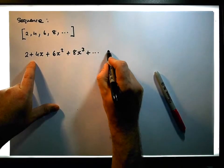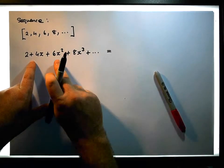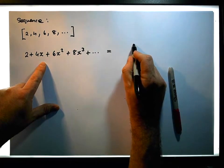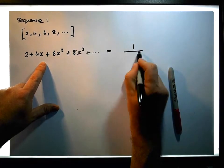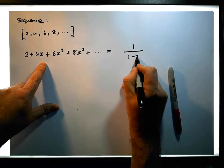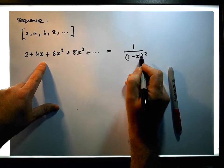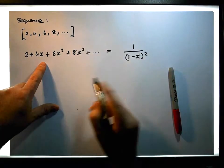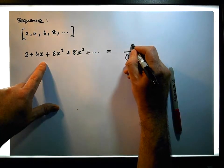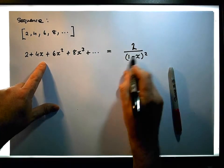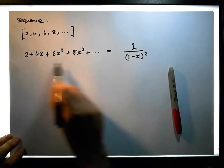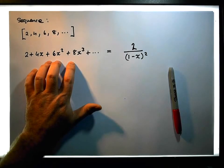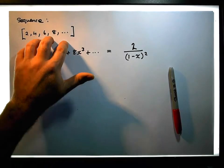In a previous video, we showed that the generating function associated with even numbers is: for the natural numbers it's 1/(1-x²), and if we multiply all the natural numbers by two, the natural numbers shift to even numbers. So it's actually 2/(1-x²), which gives us the generating function for this particular power series encoding the even numbers.